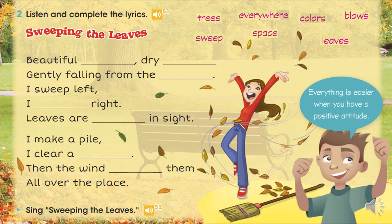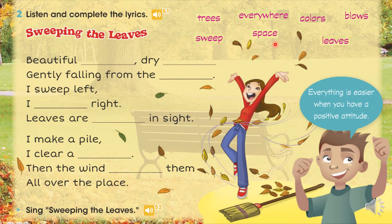We're going to continue with activity number two. Listen and complete the lyrics. Vamos a continuar con la actividad número dos. Presten mucha atención porque esta parte de la clase la voy a dejar como tarea. Vamos a escuchar una canción y vamos a completar los espacios en blanco. Tenemos al costado las palabras: trees, everywhere, colors, blows, sweep, space, leaves. Cuando terminen de completar, van a tomar una foto y me la van a enviar como tarea.